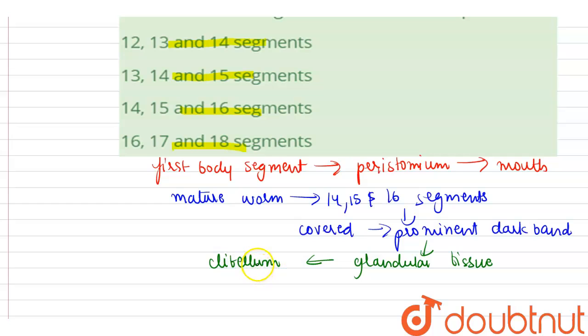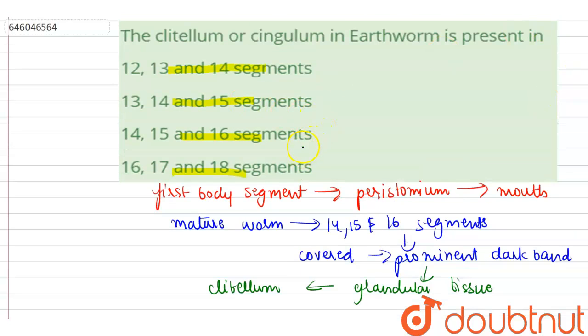So the correct option is 14, 15, and 16 segments. The other options are incorrect because clitellum in earthworm is present in 14, 15, and 16 segments. Thank you.